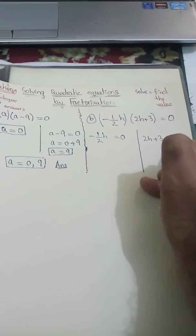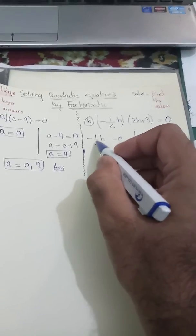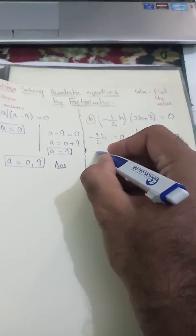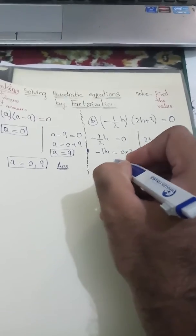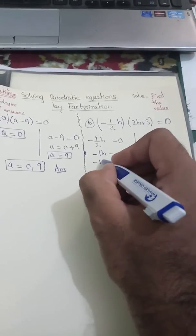Now I will use simple maths. This 2 is being divided over here, and when you move it on the other side it will be multiplied. This will be -1h = 0 × 2, which equals 0. And this -1 is being multiplied by h.